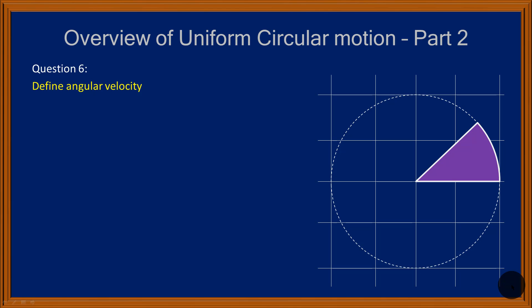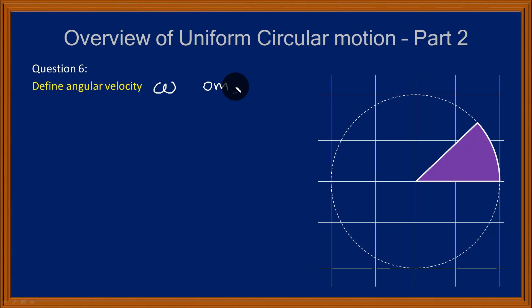Welcome to the second part of the overview of uniform circular motion. Here we are going to look at two questions. The first is the definition of the physical quantity angular velocity. Angular velocity has a symbol which looks like W — it's called omega. So, what is angular velocity?